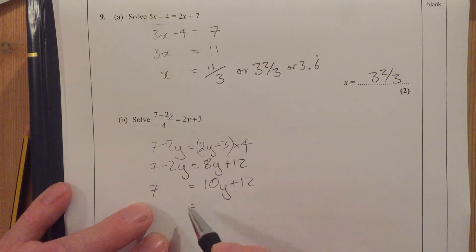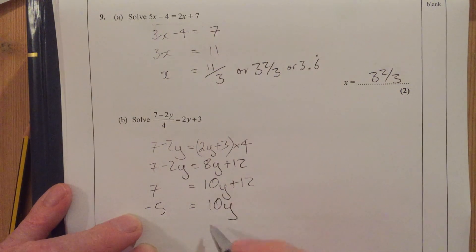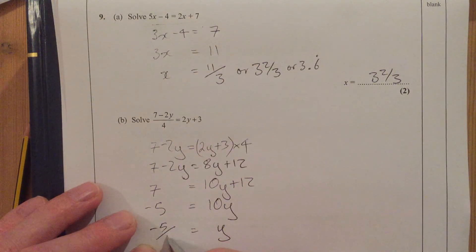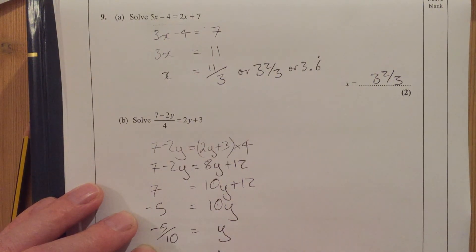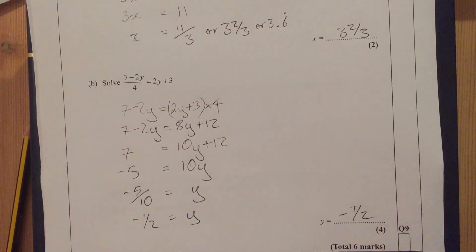And I'm going to divide by 10. Okay, that is minus 5 over 10. That's y is minus 1 half. Okay, y is minus 1 half.